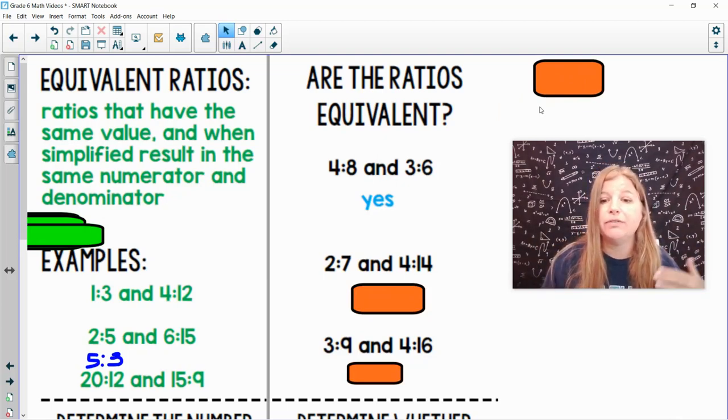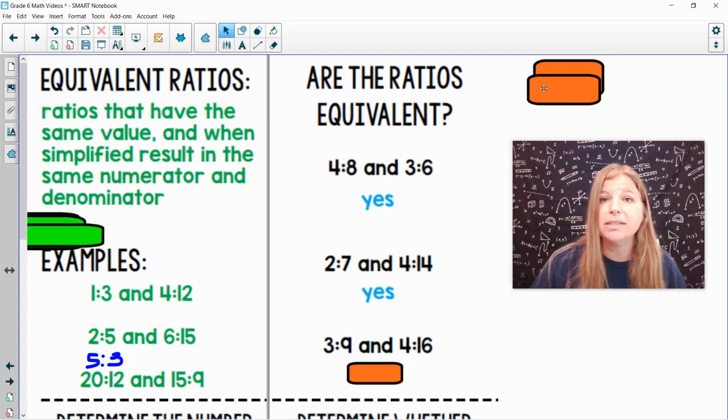2 sevenths and 4 fourteenths. If I simplify 4 fourteenths by 2, I would get 2 to 7. So that's another yes. 3 to 9 and 4 to 16. 3 to 9 is really 1 to 3, and 4 to 16 is 1 to 4. So that would be no. They don't simplify to the same ratio.